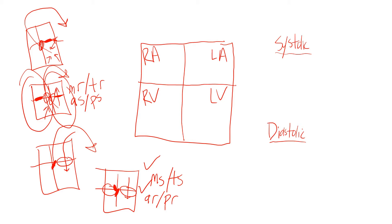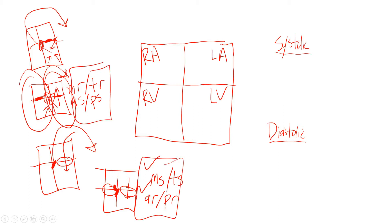I don't memorize a list of the four systolic or diastolic murmurs. Instead, I draw out the little picture and identify the two things that could go wrong from the normal situation. That's how I memorize this. This video is going to cover the maneuvers that affect those various murmurs.